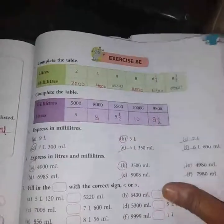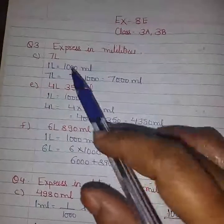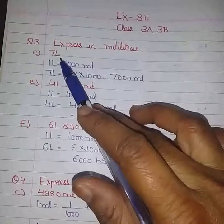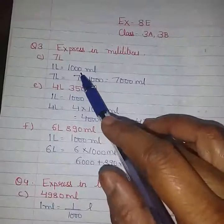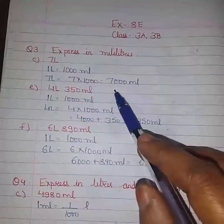Now let's see some of the questions from question 3. Question number 3, express in milliliters. Here we are given the quantity 7 liters, we have to convert it into ml. As we know 1 liter equals 1000 ml, so 7 liters equals 7000 ml.